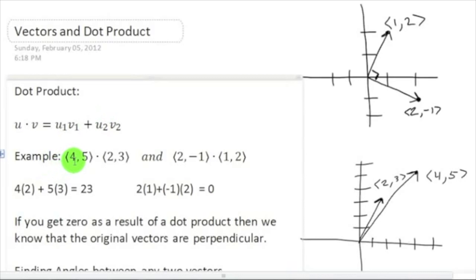So for example, if we had vector (4,5) and (2,3), if we dotted these two vectors together, it would look just like this: 4 times 2 plus 5 times 3 equals 23. If we dot the other vector (2,-1) and (1,2), we get 2 times 1 plus negative 1 times 2, which is equal to 0.